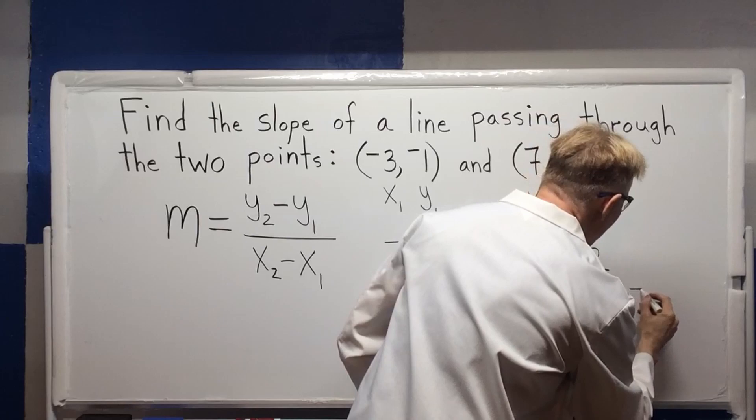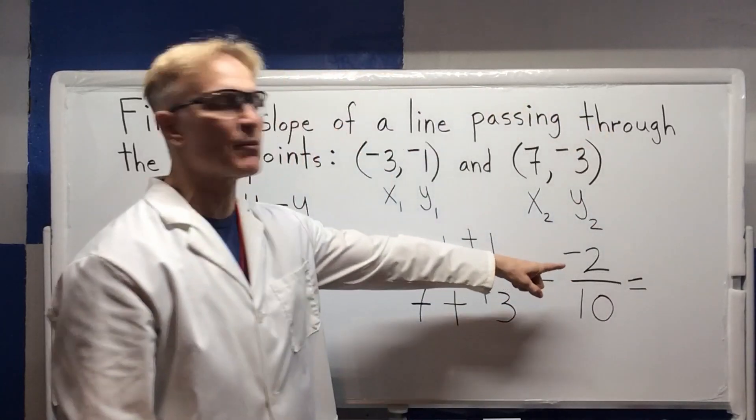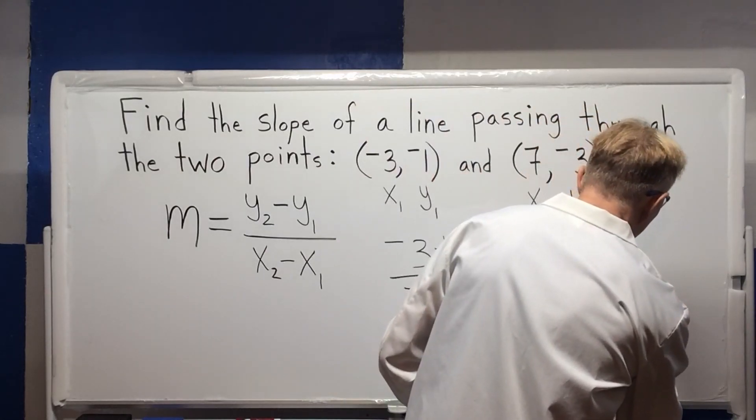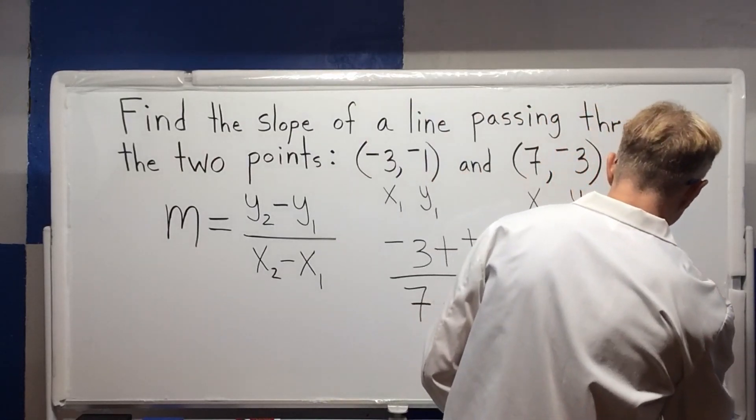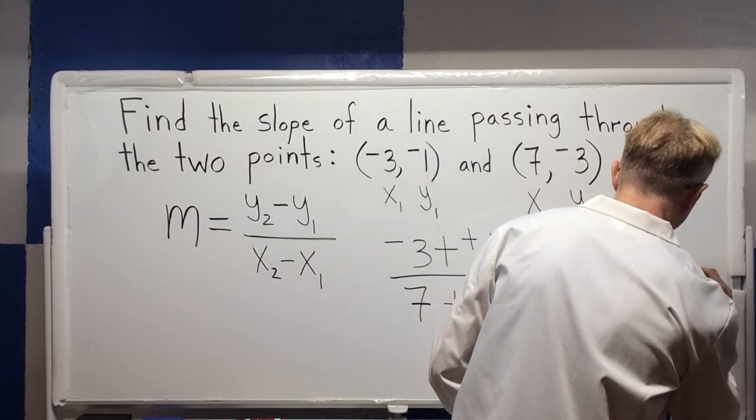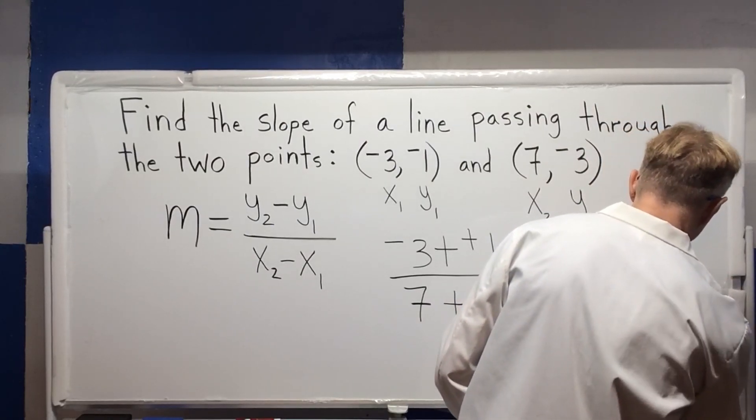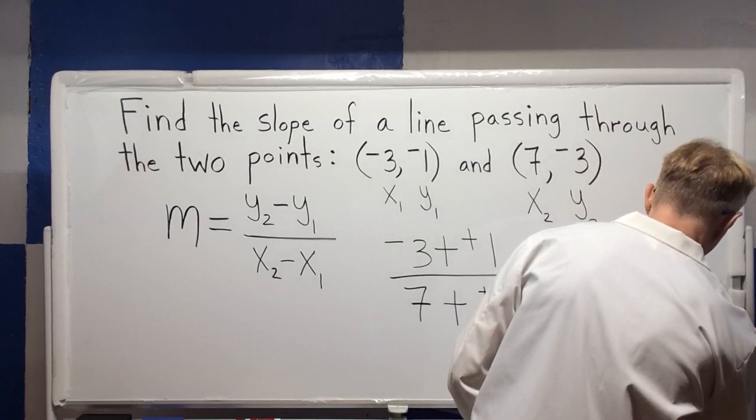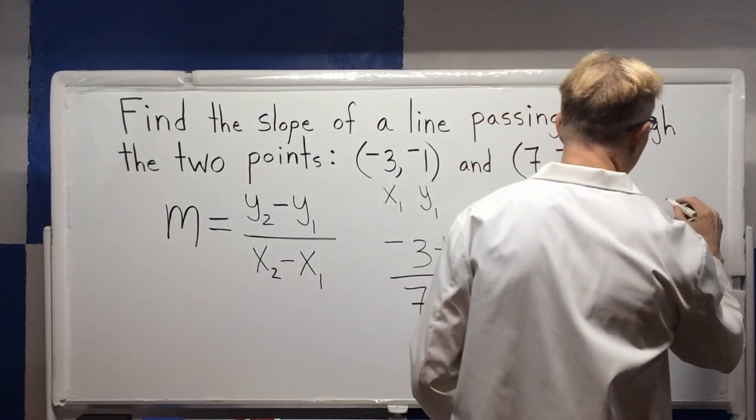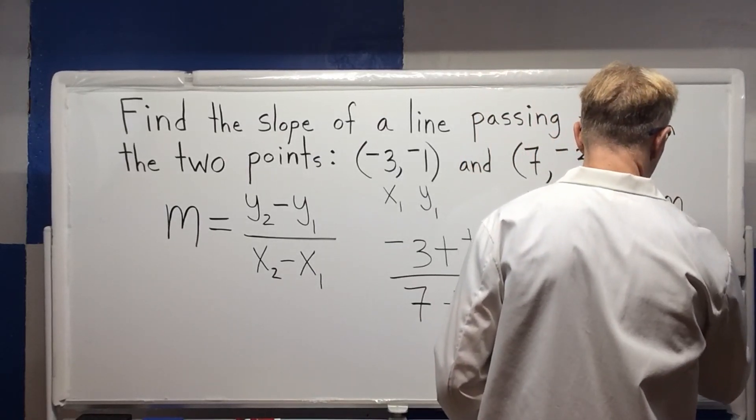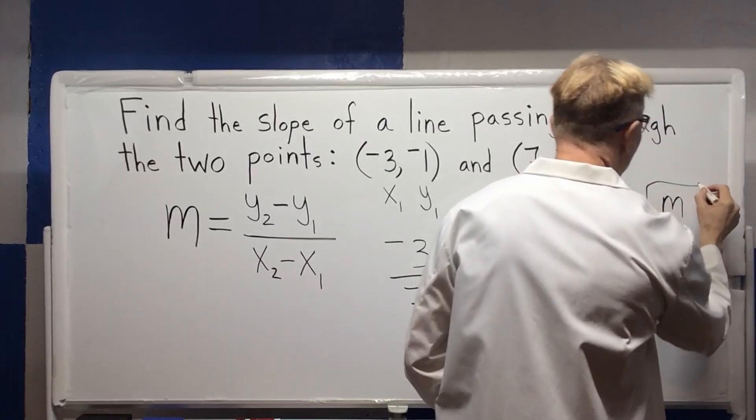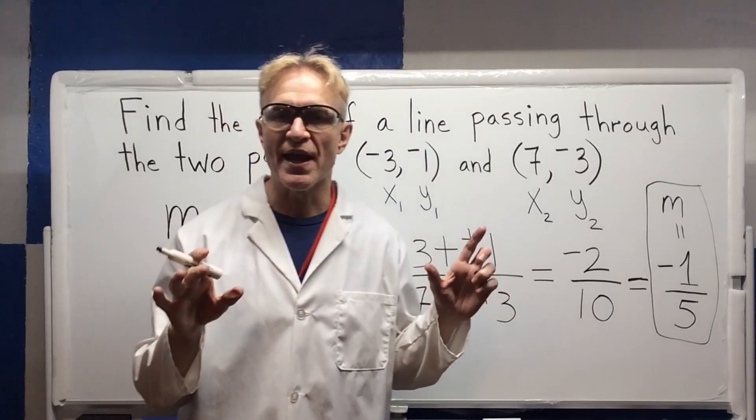I notice that that is reducible. So I'm going to reduce by dividing both by 2. So I'm going to get negative 1 on top and 5 on the bottom. So my m equals negative 1 fifth.